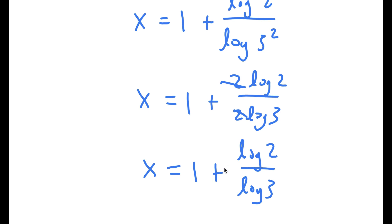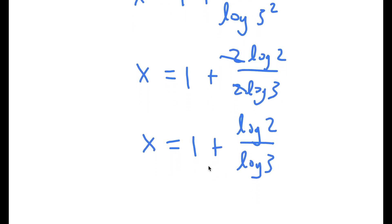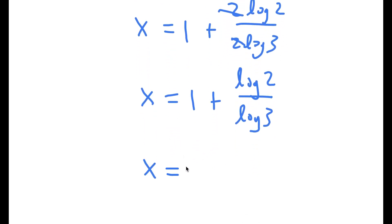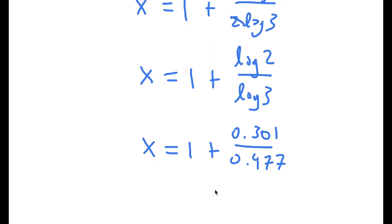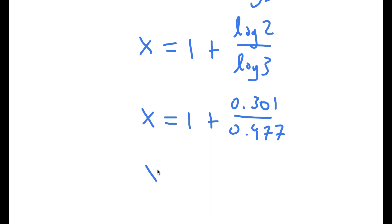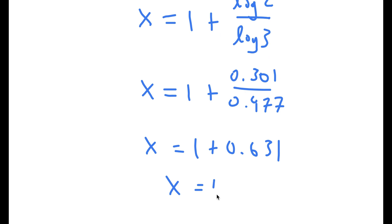Now log 2 over log 3 is the same thing as 0.301 over 0.477, which is equal to 0.631, so x is 1.631.